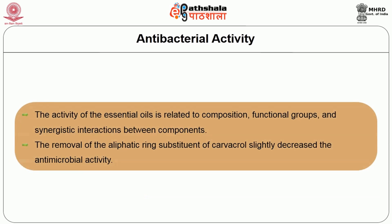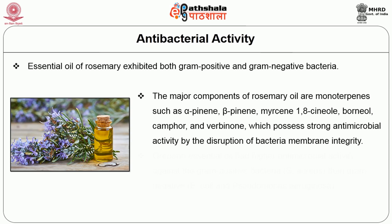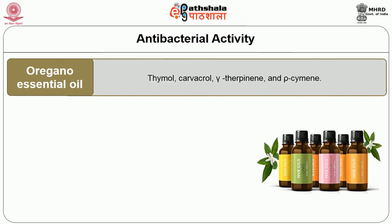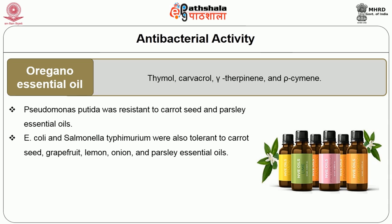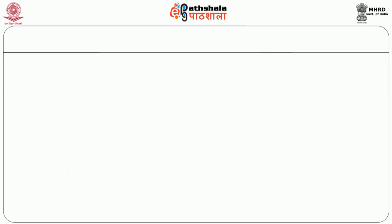The activity of essential oil involves synergistic interaction between components. The removal of the aliphatic ring supplement of carvacrol slightly decreases the antimicrobial activity. The essential oil of rosemary exhibited activity against both gram-positive and gram-negative bacteria. The major compounds of rosemary oil are monoterpenes such as alpha-pinene. Oregano essential oil had higher antimicrobial activity against gram-positive bacteria than gram-negative. The main constituents of oregano essential oil are thymol and carvacrol. However, Pseudomonas was resistant to carrot seed and parsley essential oil. E. coli and Salmonella were also tolerant to carrot seed, grapefruit, lemon, onion and parsley essential oil. The greater resistance of gram-negative bacteria toward essential oil may be attributed to the complexity of the double-layer cell membrane compared with the single-layer membrane of gram-positive bacteria.